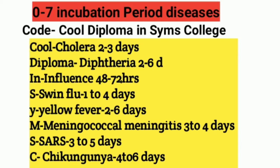Let's look at diseases with an incubation period of 0 to 7 days. The mnemonic code is 'Cool Diploma In Sims College.' Cool stands for Cholera: 2 to 3 days. Diploma stands for D — Diphtheria: 2 to 6 days.